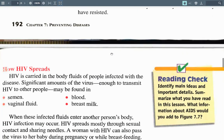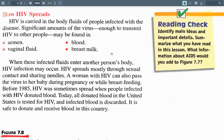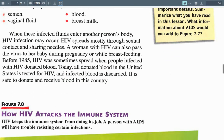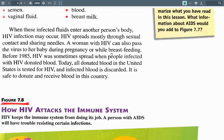HIV is carried in the body fluids of people infected with the disease. Significant amounts of the virus — enough to transmit HIV — may be found in semen, vaginal fluid, blood, and breast milk. When these infected fluids enter another person's body, HIV infection may occur. HIV spreads mostly through sexual contact and sharing needles. A woman with HIV can also pass the virus to her baby during pregnancy or while breastfeeding. Before 1985, HIV was sometimes spread through infected donated blood. Today, all donated blood in the United States is tested for HIV and infected blood is discarded. It is safe to donate and receive blood in this country.